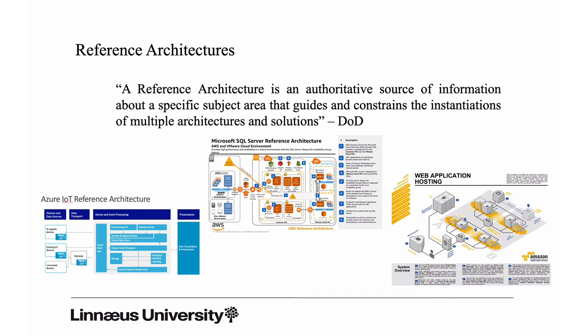So a reference architecture guides and constrains multiple implementations. The FIWARE IoT reference architecture is valid for all FIWARE IoT applications, and the Amazon web application hosting reference architecture is valid for all web applications hosted in the Amazon infrastructure. A reference architecture provides architects with a head start — you don't have to spend too much time figuring things out, because the descriptions from the infrastructure provider give you that starting point.